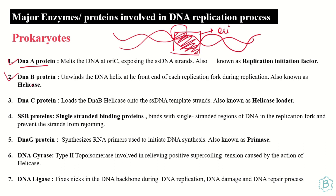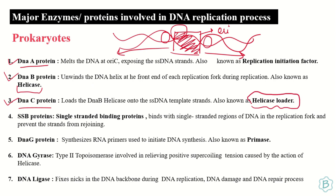Next is the DnaB protein. DnaB is an enzyme known as the helicase enzyme, which starts the unwinding of the rest of the DNA. It moves in both directions so that unwinding occurs and replication can happen smoothly. Next is the DnaC protein, also known as the helicase loader. It loads the helicase to the specific location so that it is placed properly and can start the unwinding of the DNA.